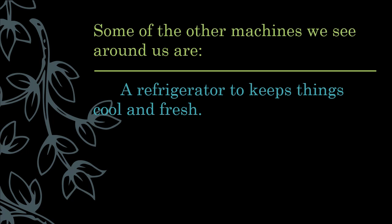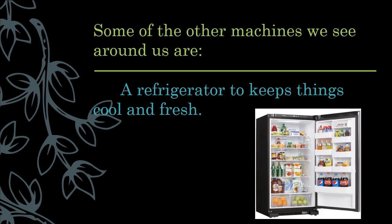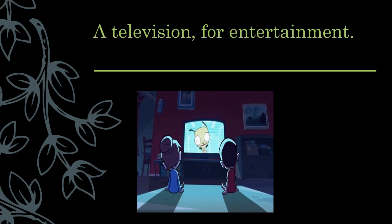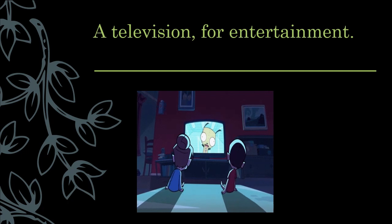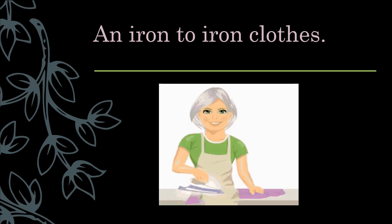Some of the other machines we see around us are refrigerator. It keeps things cool and fresh. A television for entertainment. We use television to watch cartoons and movies. An iron to iron clothes. We use an iron to iron clothes.